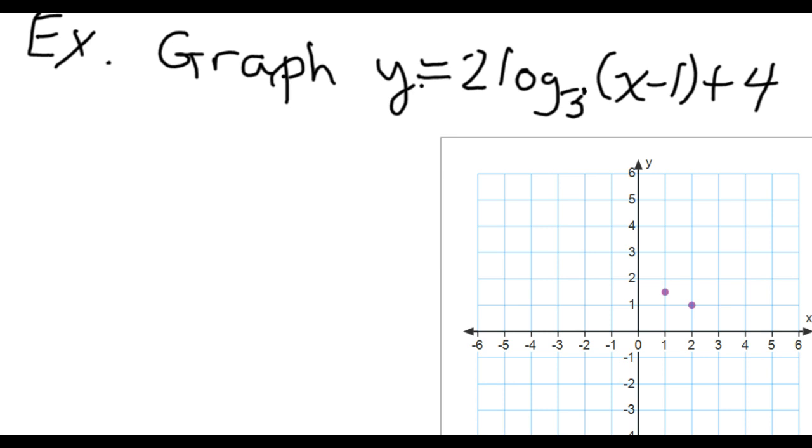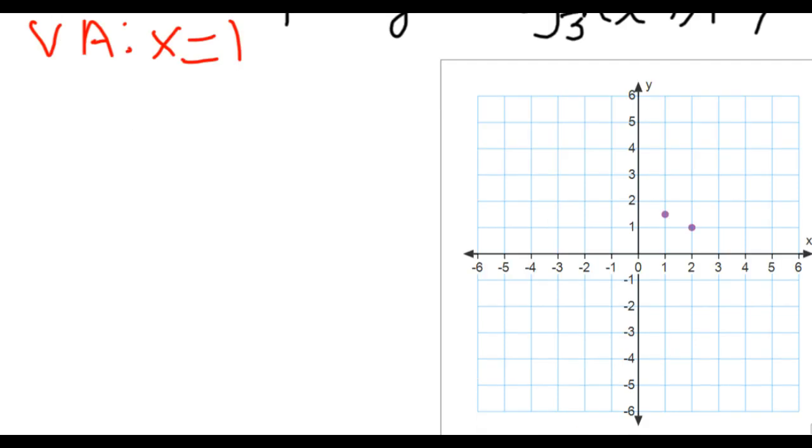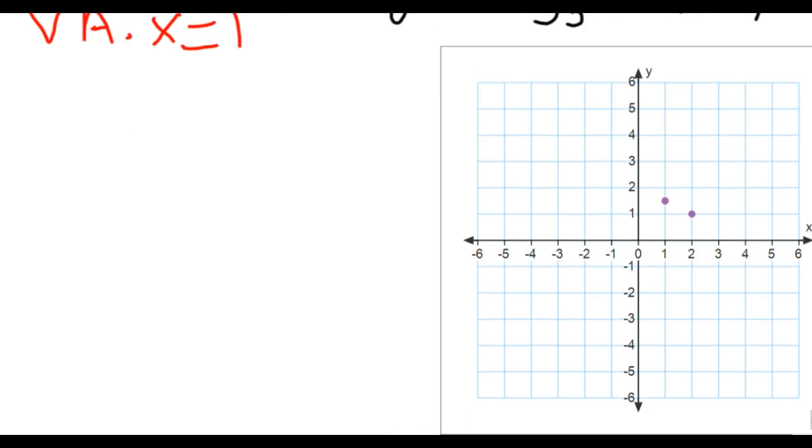I have Y equals 2 times log base 3 of X minus 1 plus 4. My vertical asymptote in this will be the line X equals 1. So I'm going to come over to my graph. I'm going to type in X equals 1 right here. I don't know what those purple points are. They're just hanging out. I don't know why. But we'll disregard those for now.